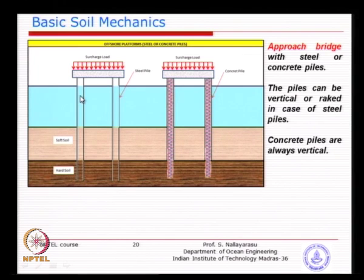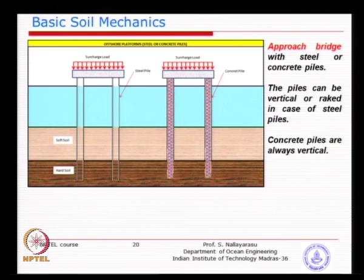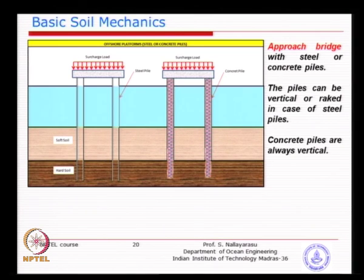This end of the pile is open - it is an open-ended pipe pile. If you close it, the amount of resistance developing during driving would be very large and you would not be able to drive it. That is why we drive it open-ended. Alternatively, you can make a hole in the ground, put the pile in, and do concrete all around. Whenever you encounter very hard rock but still want to go for a steel pile, you can drill a hole, place the pipe, and do a concrete grout - but this is very expensive.